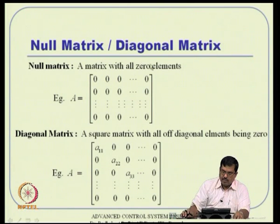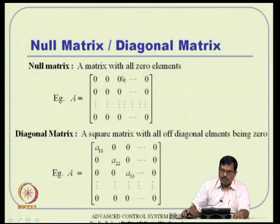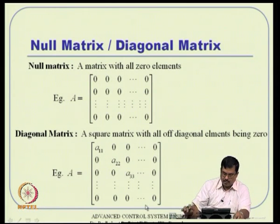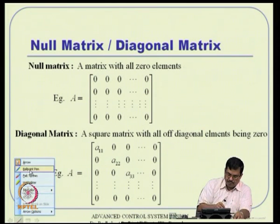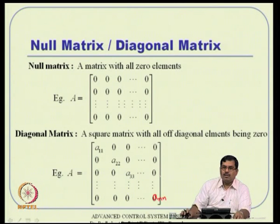A null matrix is a matrix where all elements are zero. A diagonal matrix is a square matrix where all off-diagonal elements are zero — only the diagonal entries such as A_NN can be non-zero; anything other than those diagonal positions is zero.